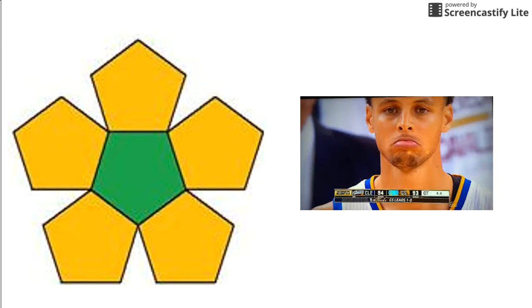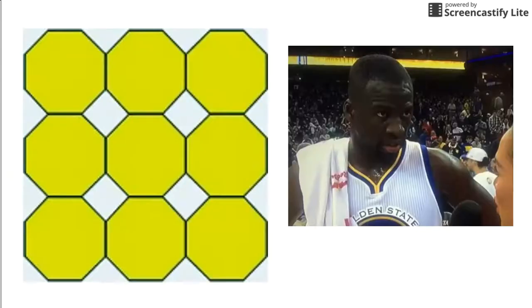All right. Who do we have as our fourth contestant on Does it Tessellate? Oh, a surprised, confused looking Draymond Green. All right, Draymond Green. Does this shape tessellate?